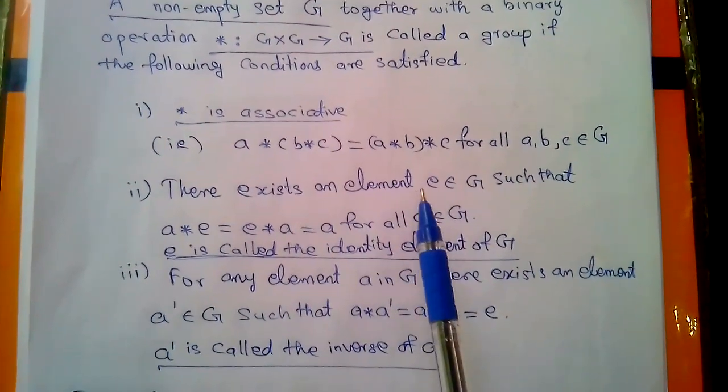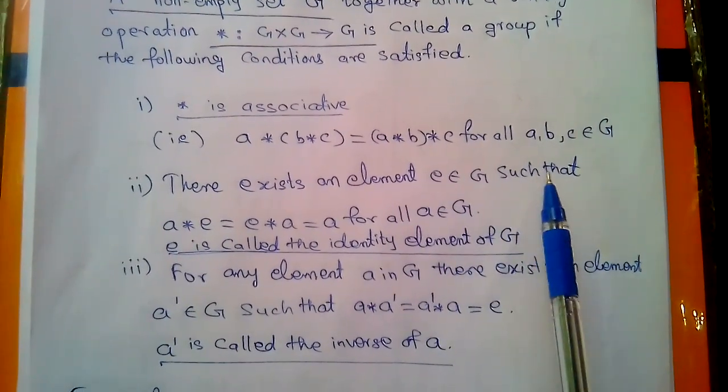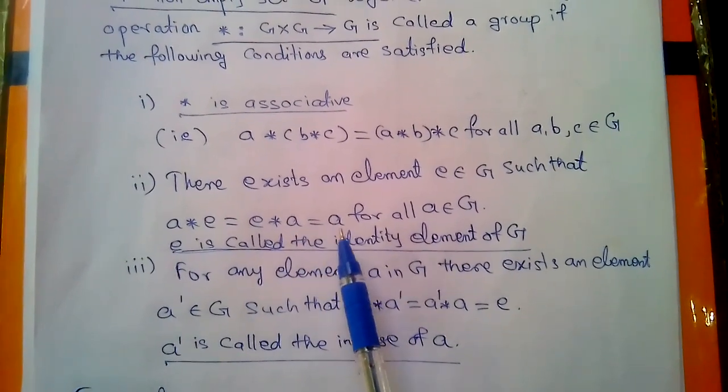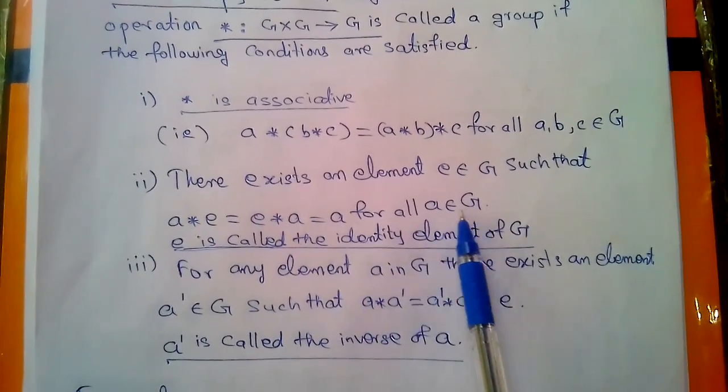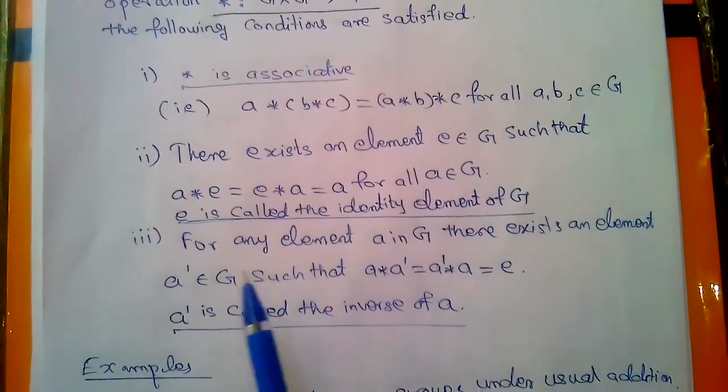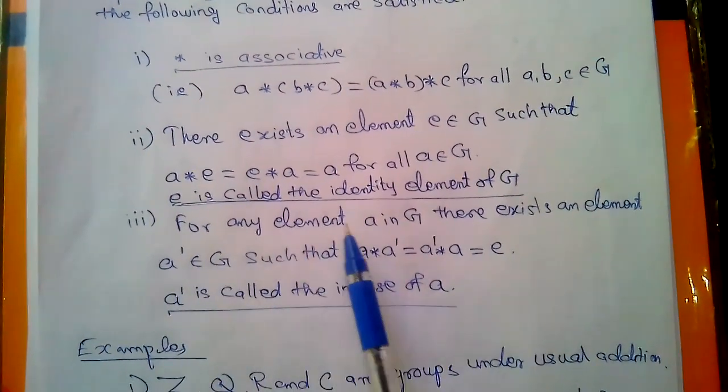There exists an element e belongs to G such that a star e is equal to e star a is equal to a for all a belongs to G. e is called the identity element of G.